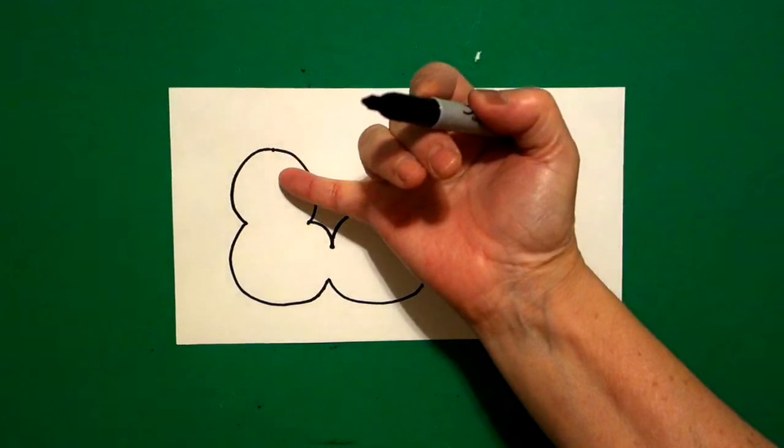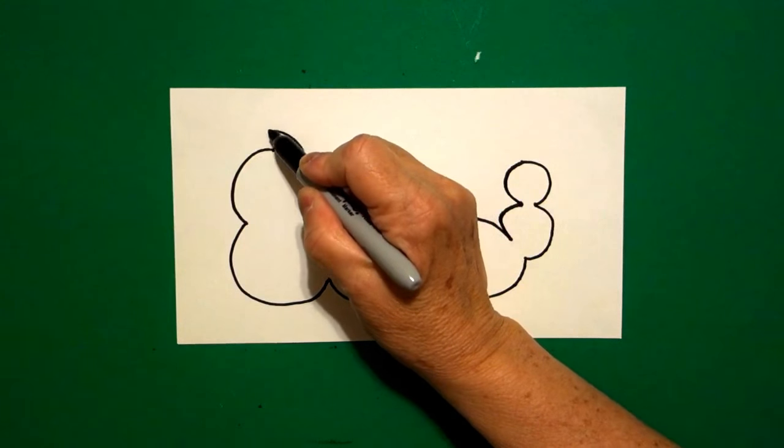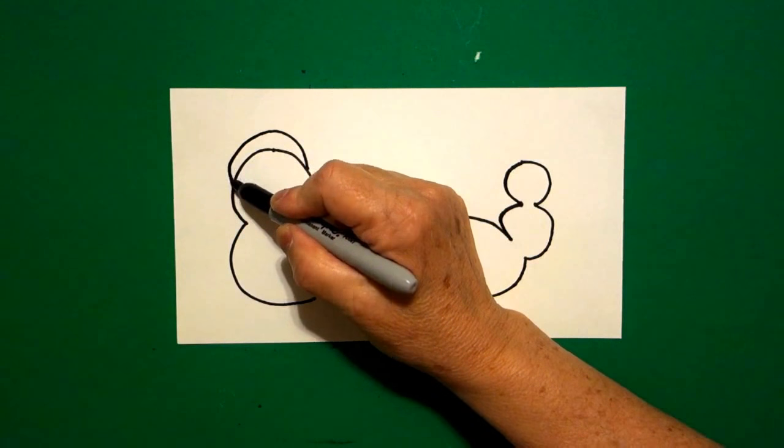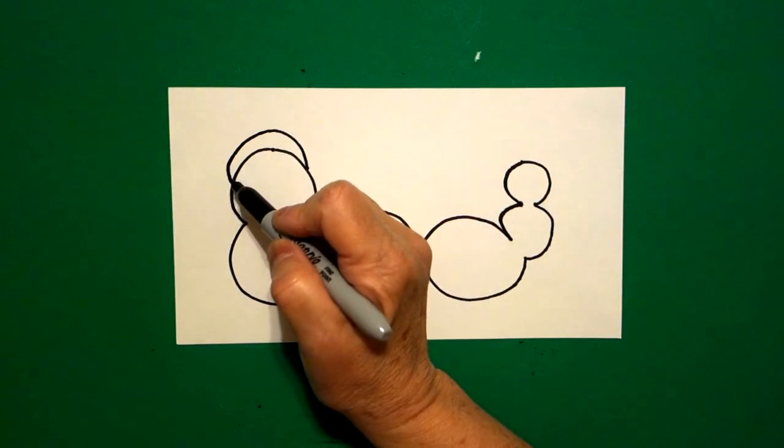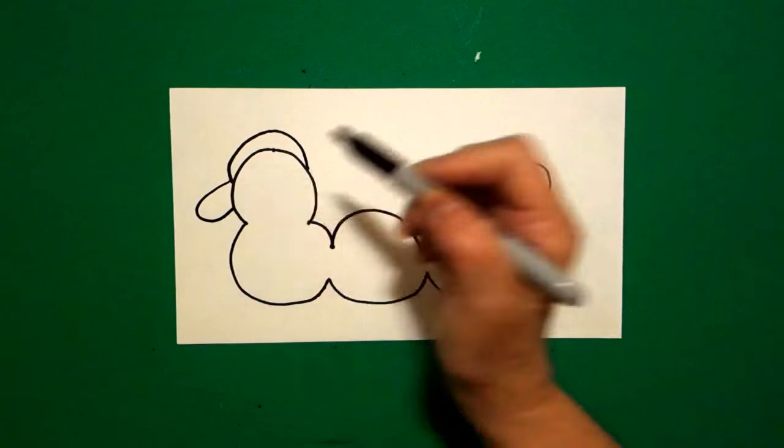I come back to the top part right over here and I'm going to draw on top a curved line up, over, connect. And right at this point, I draw a curved line out, in, connect.